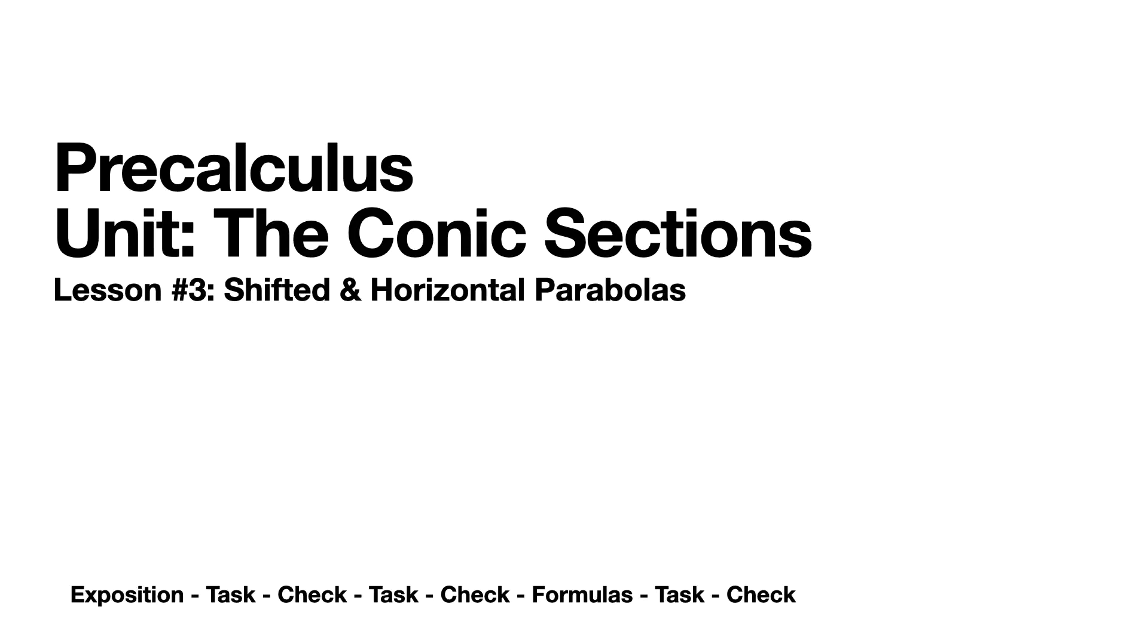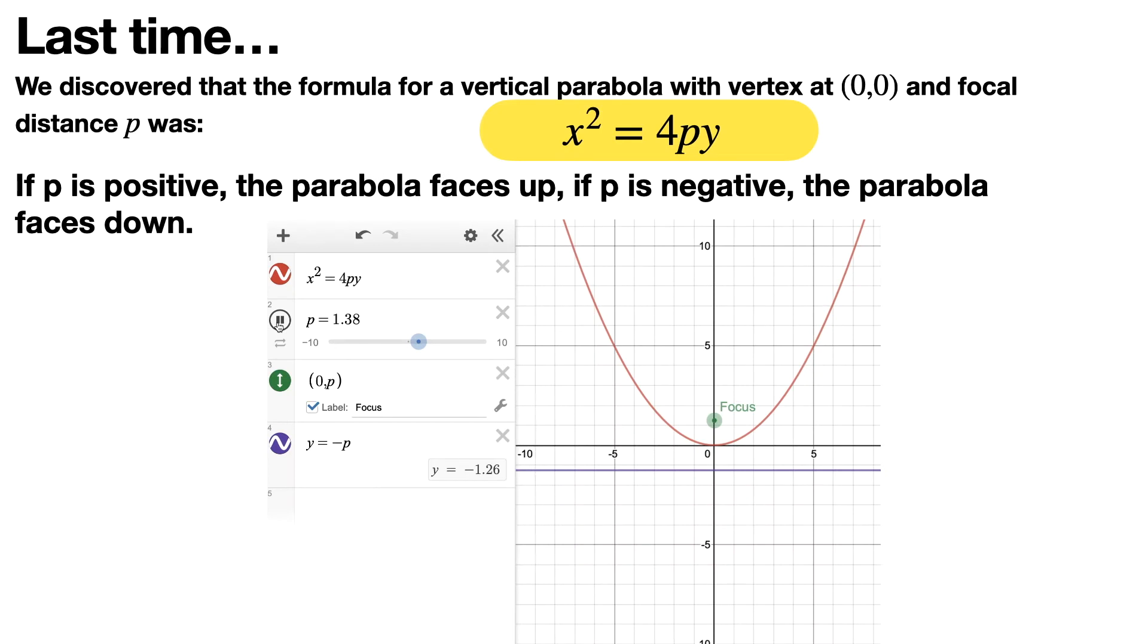Welcome to our third lesson on shifted and horizontal parabolas. Last time, we discovered that a formula for a vertical parabola with vertex at (0,0) and focal distance p was x² = 4py. If p is positive, the parabola faces up, and if p is negative, the parabola faces down.